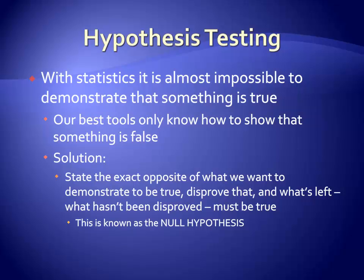This may seem backward, but we do this because we're better at estimating what the data would look like if the relationship did not exist, as opposed to estimating what it would look like if the relationship did exist. Put simply, our best tools only know how to show that something is false. Therefore, we will start off with the assumption that a null relationship exists in our models, then use the data we have to try to disprove that statement. This process is what's known as null hypothesis significance testing.